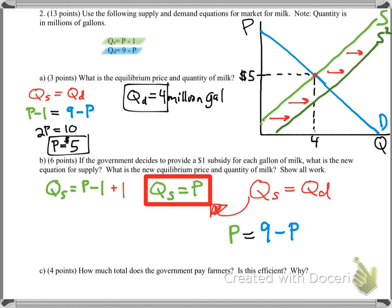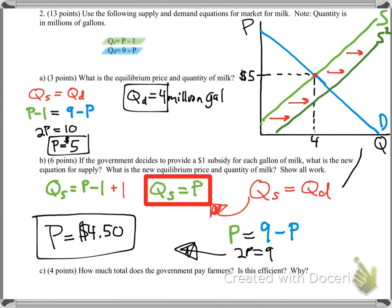And you solve for P, add P to both sides, and then divide by 2. So I guess I'll show the work. So 2P equals 9, and then I'm going to come over here. Then you get P equals $4.50 because 9 divided by 2 is 4.5. And that is your price. So that is your new equilibrium price. So, and you can show that here on the graph as well.